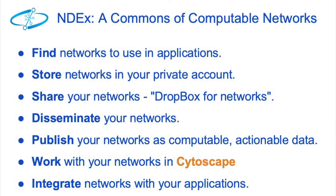Here is the overview. You can find networks to use in applications. You can store your networks in your private account. You can share your networks — think of it like Dropbox for networks. You can disseminate your networks. You can publish your networks as computable, actionable data. You can work with your networks in Cytoscape. And you can integrate your networks with your applications or scripts.